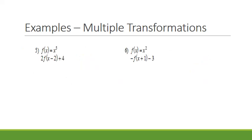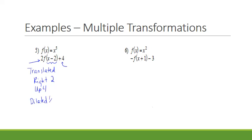For number 1 in function notation, the first thing I look at is how it's been shifted horizontally — I look at the x, and it says x minus 2, so this has been translated right 2. Then I look to see what's been added to f of x — so it's also been translated up 4. Then I look in front of f of x: if this were a negative 2, we'd say it's been reflected and dilated. However, it's a positive 2, so it's been dilated by 2.